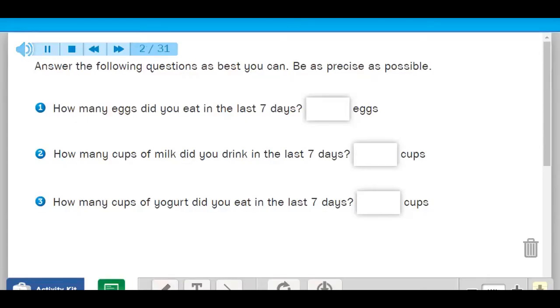Math Message. Answer the following questions as best you can. Be as precise as possible. Number 1: How many eggs did you eat in the last 7 days? Blank eggs. Number 2: How many cups of milk did you drink in the last 7 days? Blank cups. Number 3: How many cups of yogurt did you eat in the last 7 days? You can answer those and then unpause the screen when you are done.